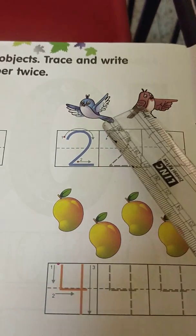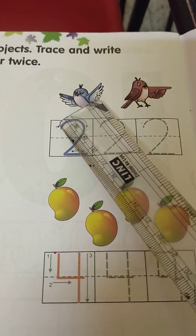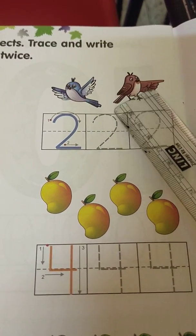Second one. How many birds? One, two. So you trace here, two. Again, two.